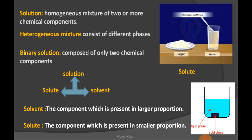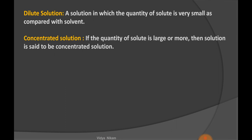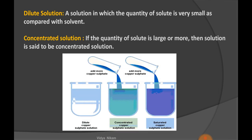For example, sugar is the solute and water is the solvent. Depending on the amount of solute present in a solvent, the solution is classified into two types: dilute solution and concentrated solution. The dilute solution is the solution in which the quantity of solute is very small as compared to solvent, and concentrated solution is the solution in which the quantity of solute is large or more.